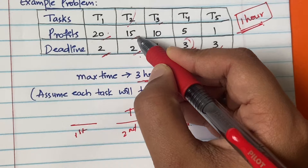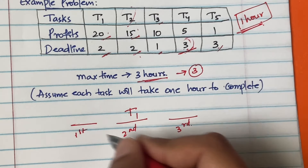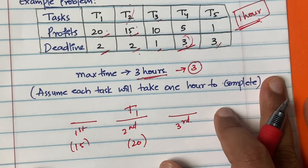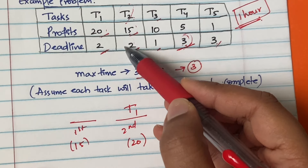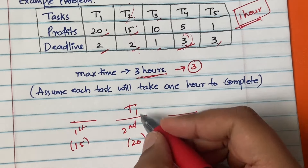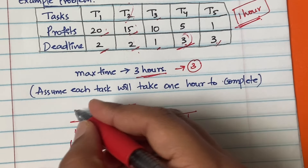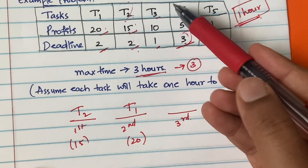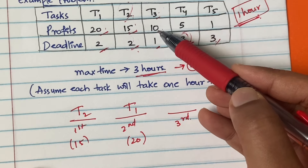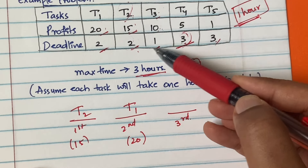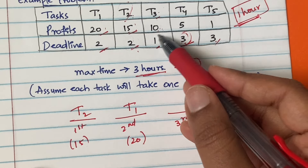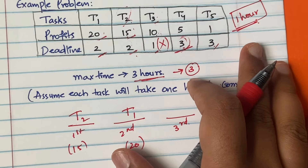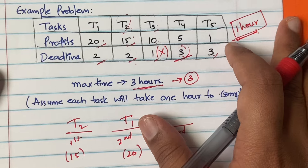The next highest profit task is t2 with 15 units. T2 is ready to wait for two hours, but the second slot is already occupied, so place t2 in the first slot. Next, t3 has a profit of 10 but its deadline is only one hour, meaning it must go in the first slot — which is already occupied — so we ignore t3.